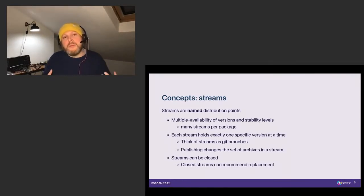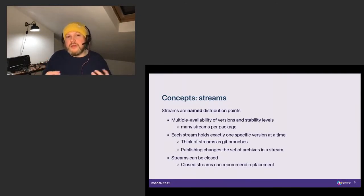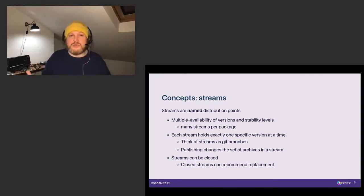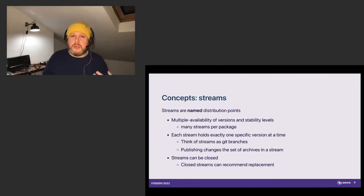A very important property is that a stream holds at a single point in time exactly one version of the software. So any archive within that stream is exactly the same version as all the other archives in that stream. Obviously when you publish something, that can change. But whenever a device looks at a stream, it will find a coherent set of archives representing variations of the exact same source that something was built from.